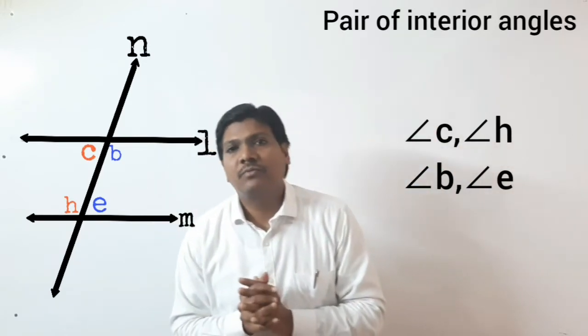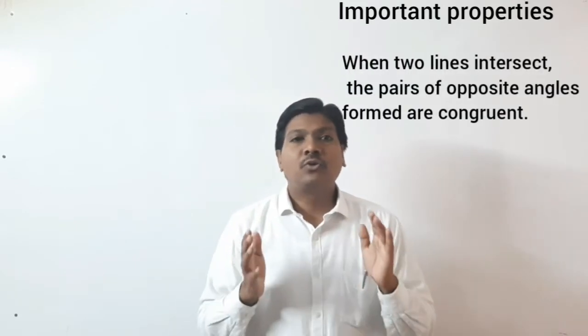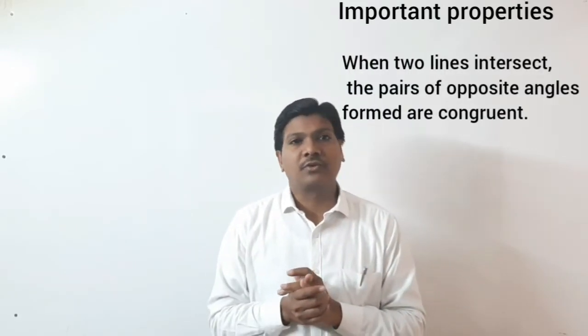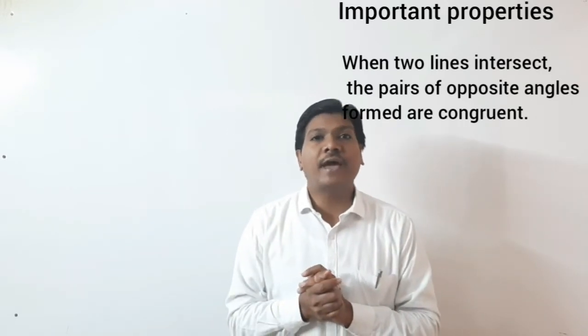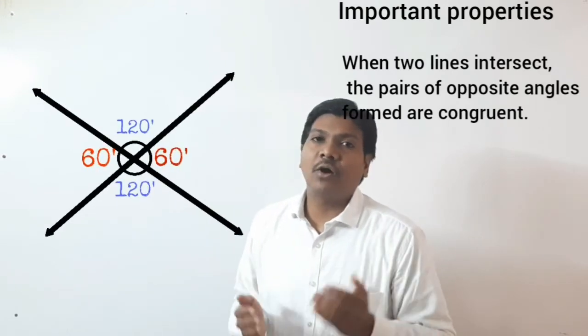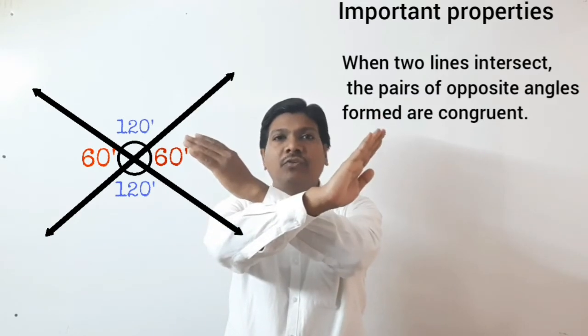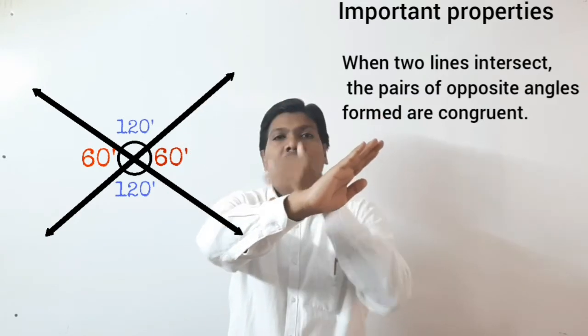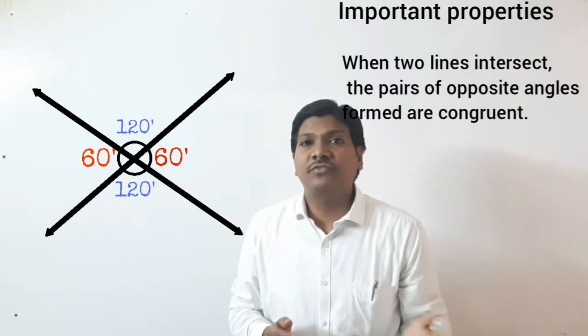Then students, from this information, you have to remember some important properties. The first property is when two lines intersect, the pairs of opposite angles form a congruent pair. This is our theorem from the first chapter — when two lines intersect each other, the opposite angles are congruent. We proved this theorem in the first chapter.